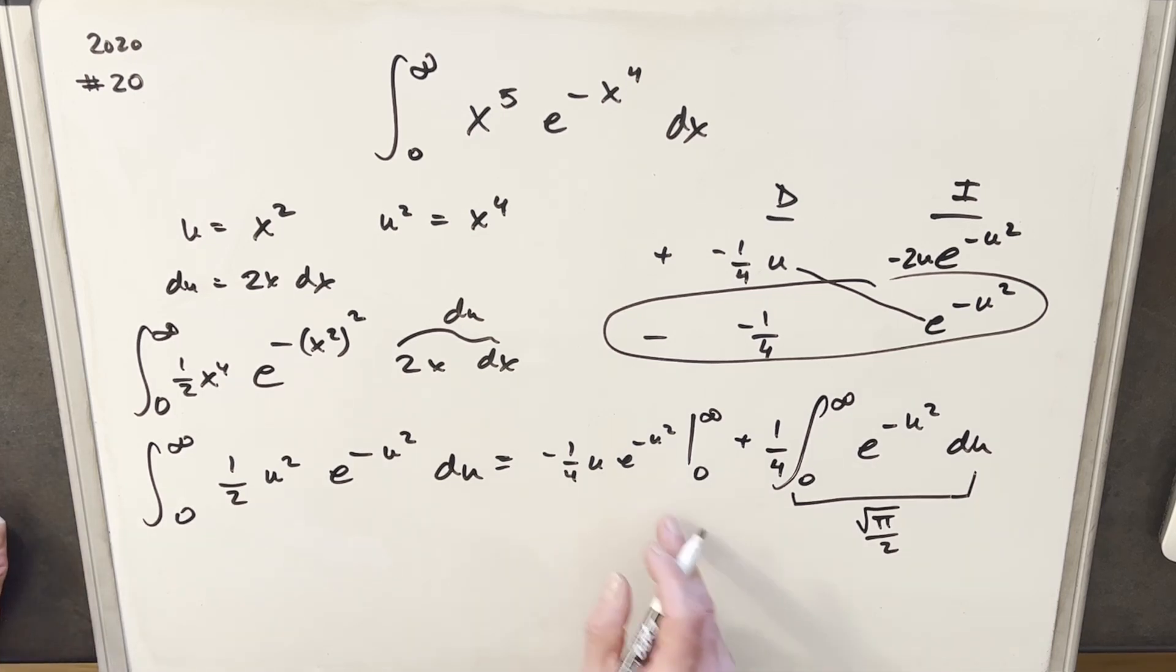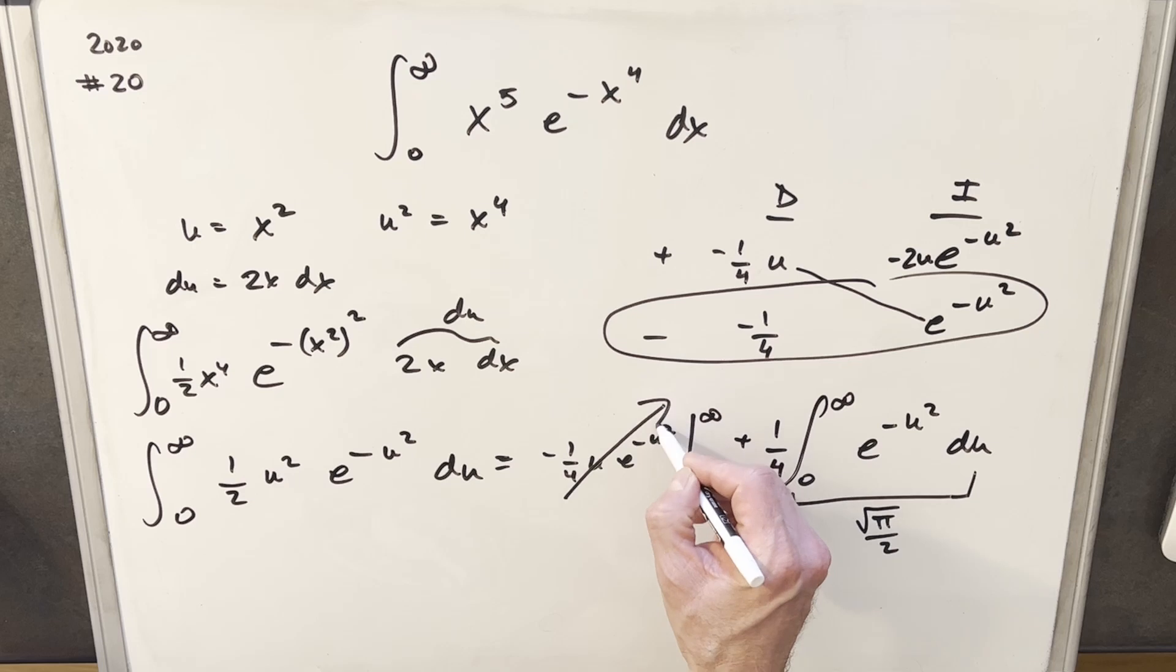But what about this piece over here? So even though we were plugging infinity in for u, this exponential term is growing much faster. So the first piece is going to 0. And then when we plug a 0 in here, that second piece is clearly going to 0. So this whole thing is actually 0. And that's going to simplify it to just this piece over here.